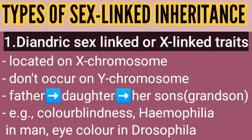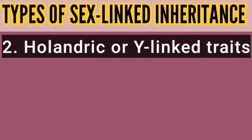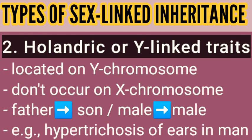Since genes for most sex-linked characters are located on the X chromosome, they are also called X-linked characters. Examples include color blindness and hemophilia in humans, and eye color in Drosophila. For holandric or Y-linked traits, genes are located on the non-homologous segment of the Y chromosome, meaning alleles of these genes do not occur on the X chromosome — it is totally different from diandric inheritance.